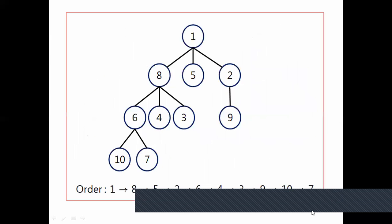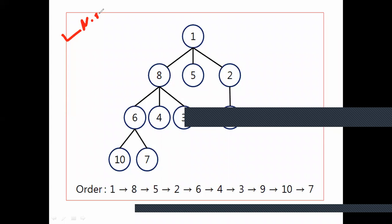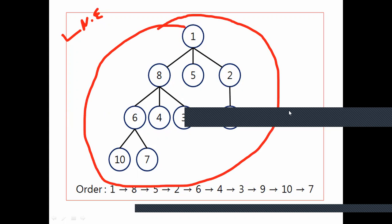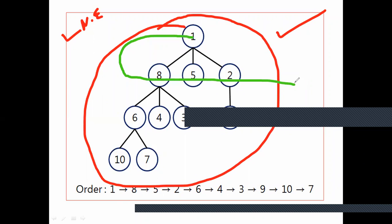Let's take this numerical example. Look at this diagram. You will find out the order in which breadth-first search technique will be conducted. As I said, algorithm-wise, the traversal order is: 1, 8, 5, 2, 6, 4, 3, 9, 10, 7.